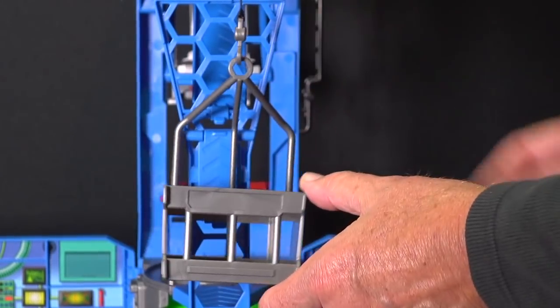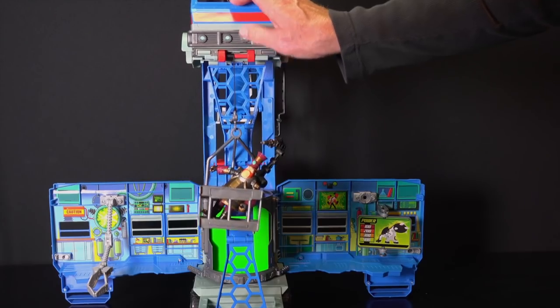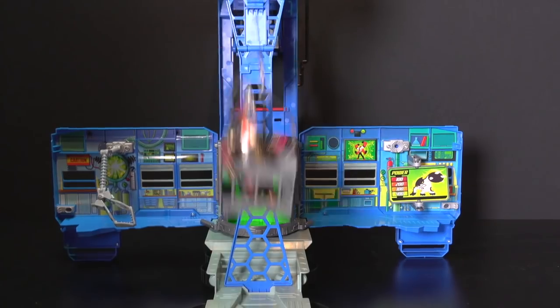Attach the winch hook to the alien container. Turn the wheels upward to raise it, or press the release button to lower it.